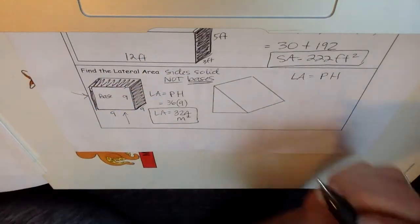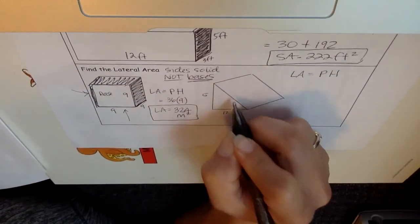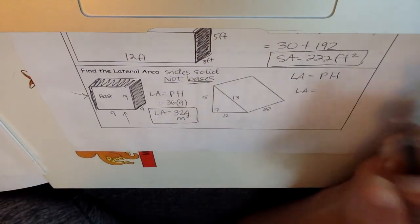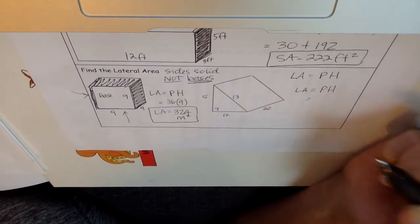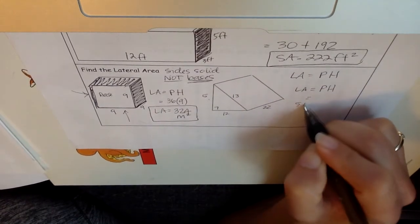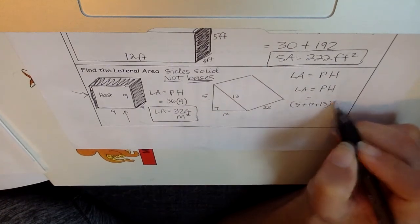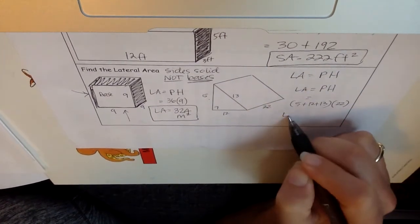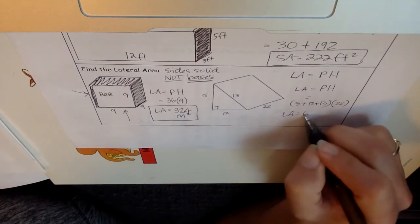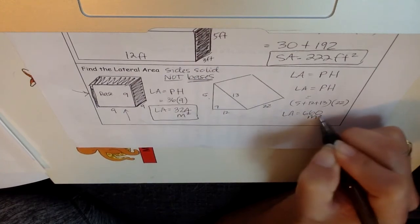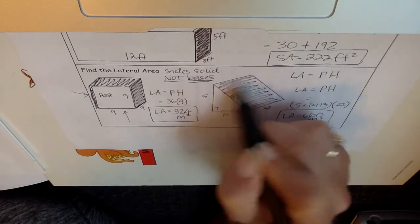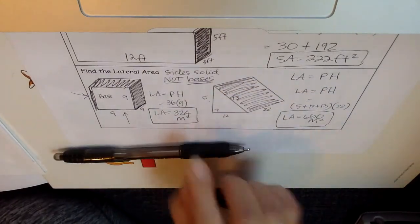In this triangle, we have sides of 5, 12, and 13, with a prism height of 22. The lateral area is the perimeter times the height. The perimeter of this triangle is 5 + 12 + 13, times the height of the prism. Typing that all in, you get 660 meters squared. That is just the lateral area — just the rectangular sides — it does not include the bases.